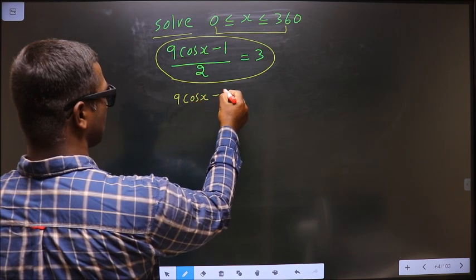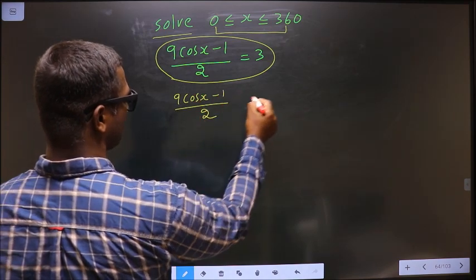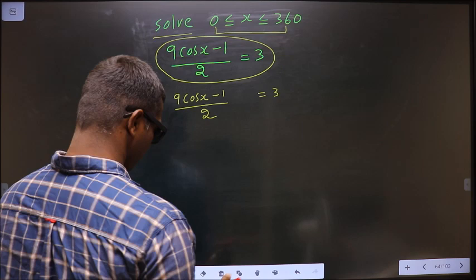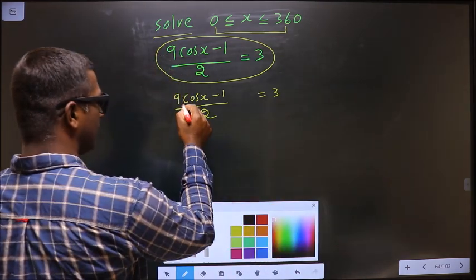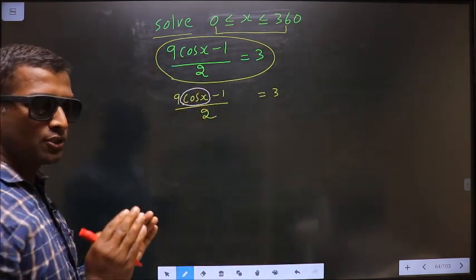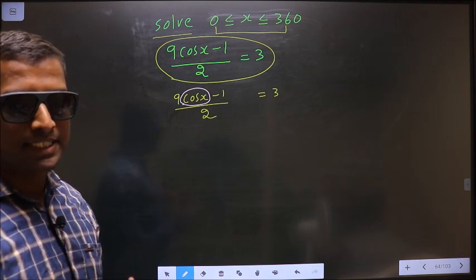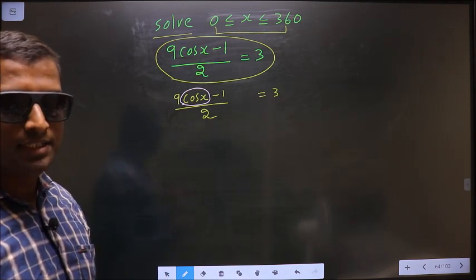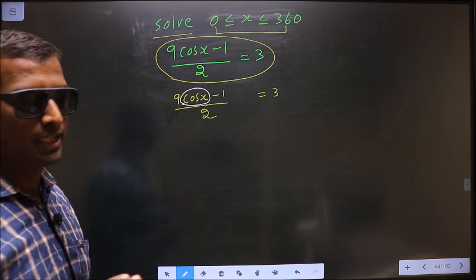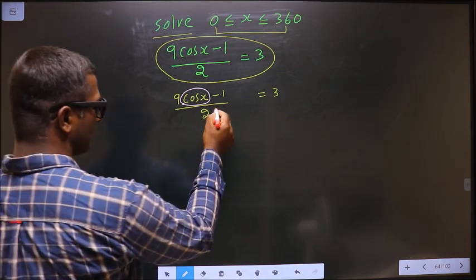First, the given equation is 9cos(x) - 1/2 = 3. Here you have cos(x), so you should make cos(x) the subject. Remove all the connections connected to cos(x) one by one. Now to remove this 2, multiply by 2 on both sides. We get 9cos(x) - 1 = 6.